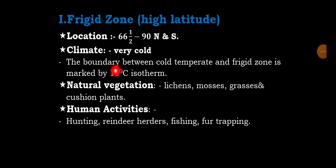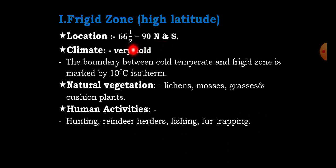Hello students, hello everyone. Welcome to this channel. My name is Mr. Baharut. Today's lesson topic is Frigid Zone or High Latitude. This region is located between 66 and a half degrees up to 90 degrees north and south. 66 and a half degrees north is called the Arctic Circle and 66 and a half degrees south is called the Antarctic Circle. 90 degrees north is the North Pole and 90 degrees south is the South Pole.